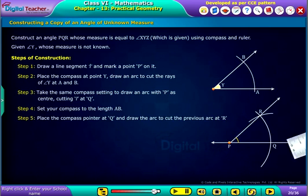Now, we observe that angle P is the same as angle Y. Thus, angle XYZ is equal to angle PQR.